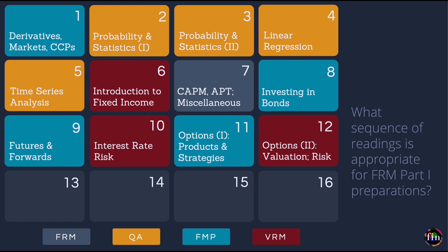Lesson 12 is still focused on options but covers valuation and the risk side. Three chapters individually focus on three different methods for valuing options: binomial trees, the Black-Scholes model, and Monte Carlo simulation — the chapter we had deferred from the quants book, now covered after learning other pricing methods. The fourth chapter covers the Greek measures and risk management of option portfolios.